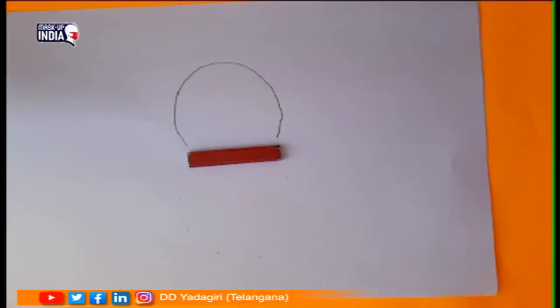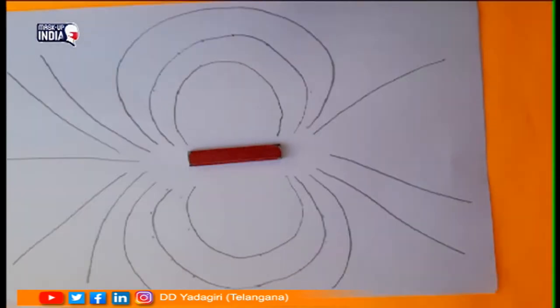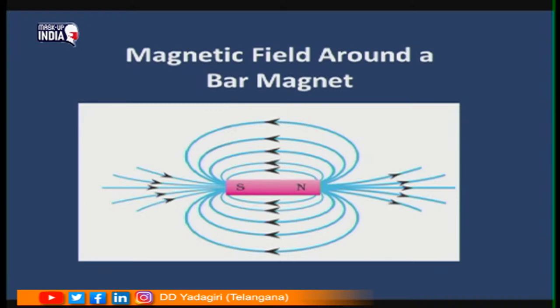Similarly, draw more lines of magnetic field around the bar magnet. The magnetic field lines around the bar magnet appear as shown. The magnetic lines of force come out of the north pole and enter the south pole outside the bar magnet, whereas inside the bar magnet the magnetic lines go from the south pole towards the north pole.